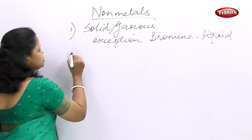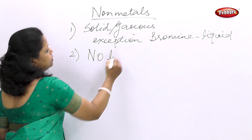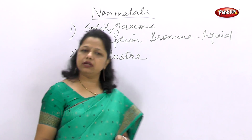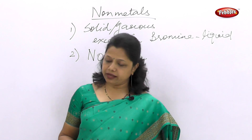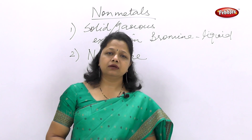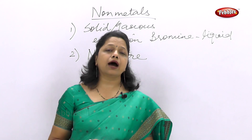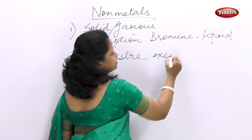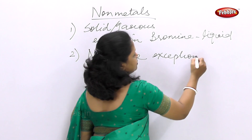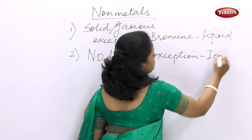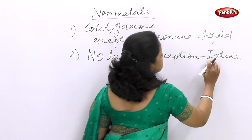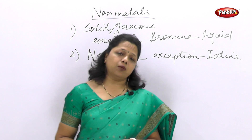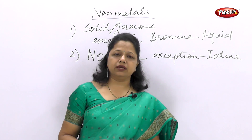Nonmetals do not shine at all, so nonmetals are not lustrous. No lustre is seen in nonmetals. However, there is an exception: iodine, which is a nonmetal but is shiny in appearance.